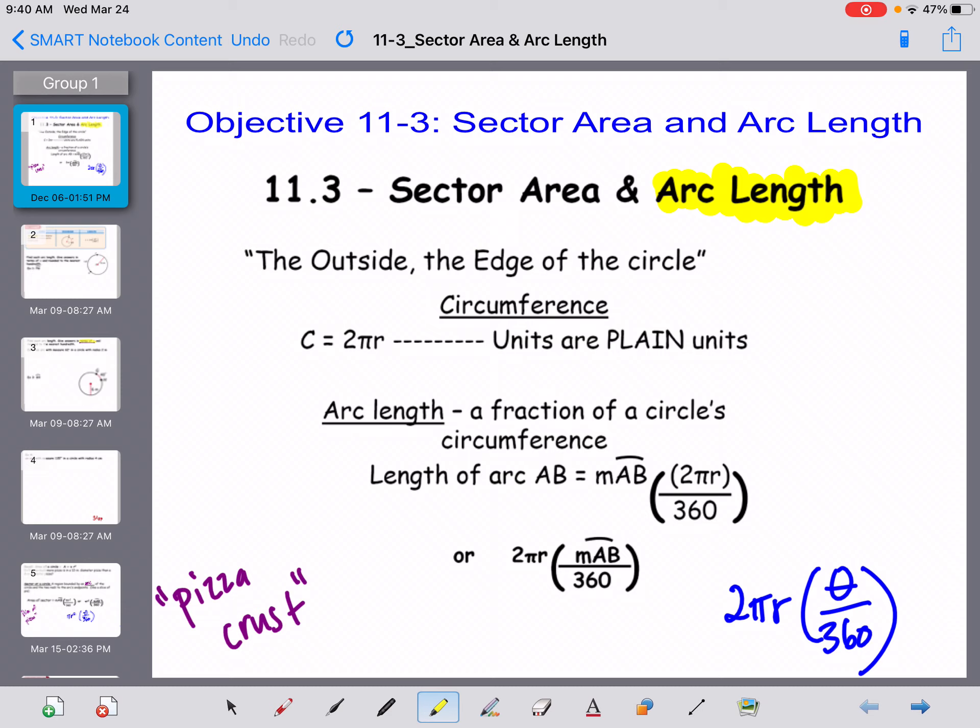So when you're talking about arc length, what we're thinking about is the outside or the edge of the circle. Remember that the circumference is 2 pi r. You also want to remember that the diameter is 2 r. So it takes two of the radius added together to equal the diameter, and these are also plain units.